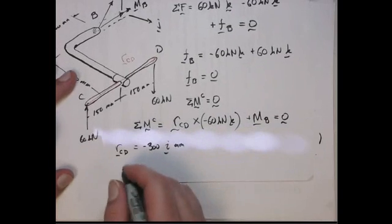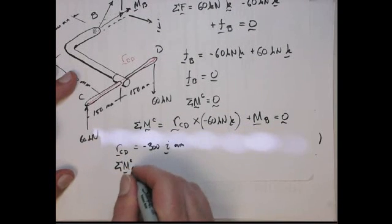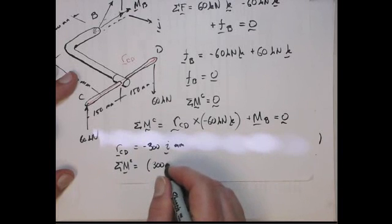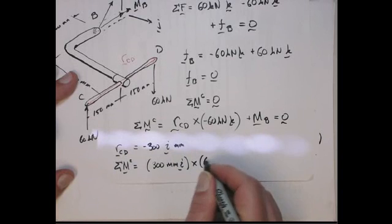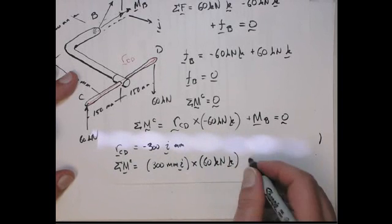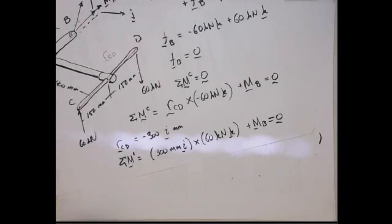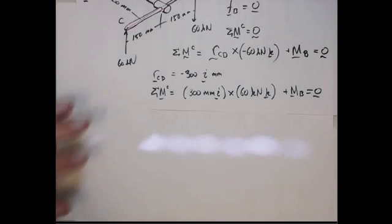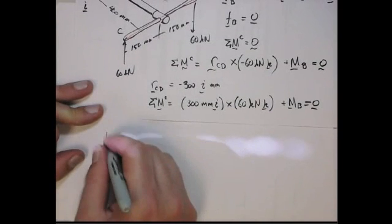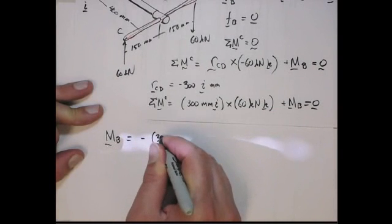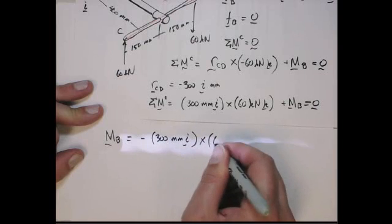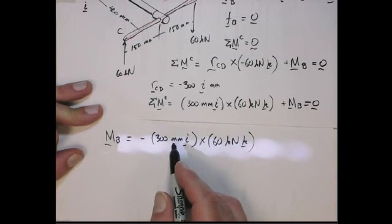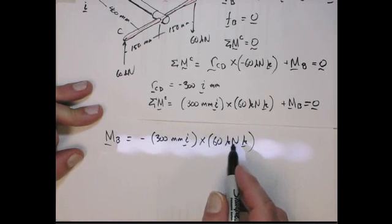Now we get the sum of moments around point C is 300 millimeters in the I direction cross 60 kilonewtons in the K direction plus MB equals 0. So now we get that MB is just minus 300 millimeters in the I direction cross 60 kilonewtons in the K direction. When we do the cross product, let's deal with the units first. You've got millimeters and kilonewtons, so a kilonewtons millimeter is a newton meter.